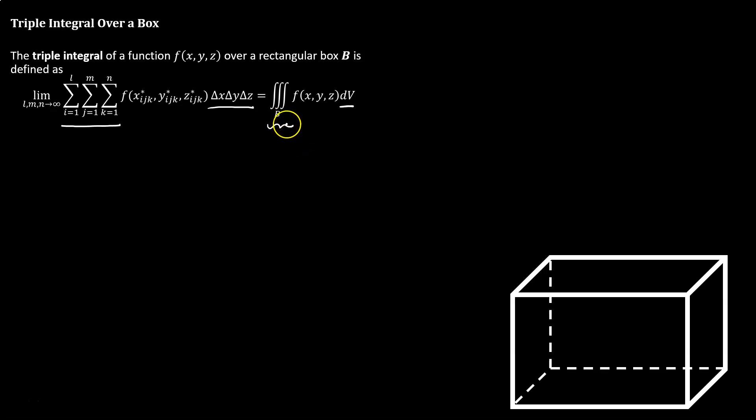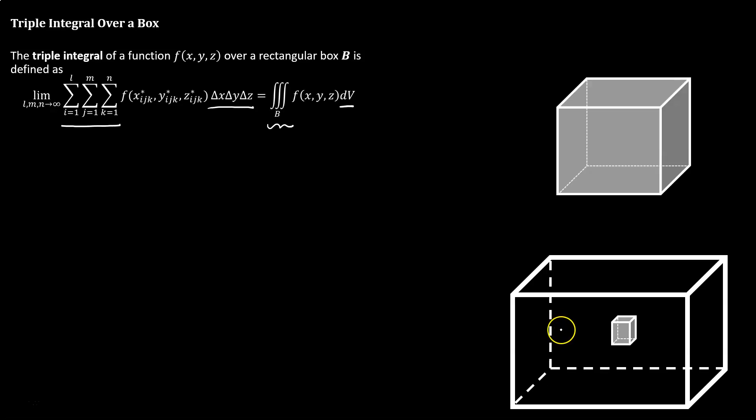For a visual of what a triple integral over a rectangular box looks like, I've got a box for you. I've got a little mini partitioned cube inside of this box that we can kind of zoom in on. We can see that the volume of that region is going to be delta x times delta y times delta z. So length times width times height for volume.